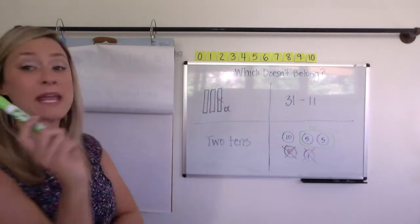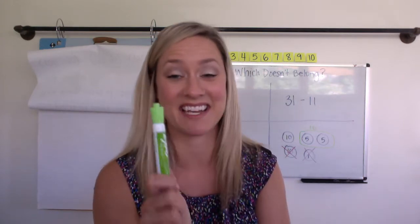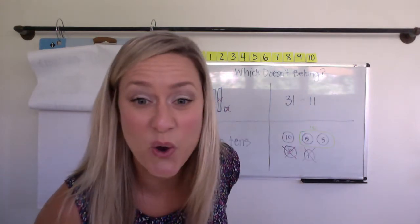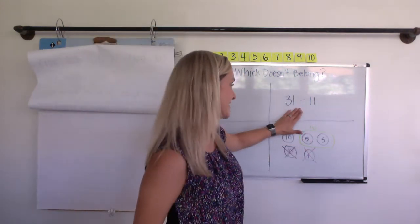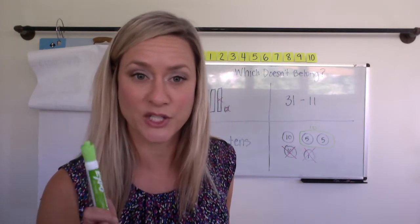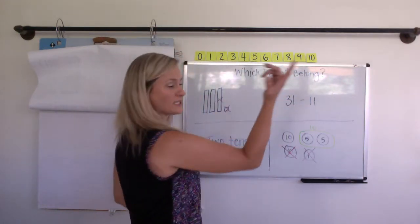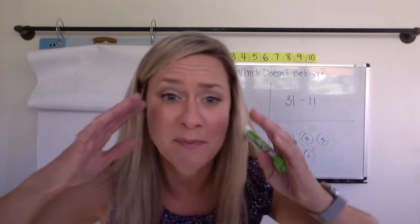I know. Somebody's going to say this one. Somebody is going to say, this one doesn't belong because it doesn't show the answer. All of the other ones show the answer, but this one doesn't. 31 minus 11 is what? It is two tens. The answer is two tens, aka 20. Now, it doesn't say it though. So maybe some of you thought that one didn't belong. I don't know. My mind is rolling around with all these ideas. Can you please tell me if I got your idea?